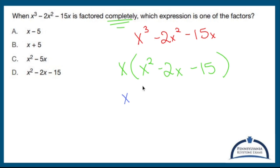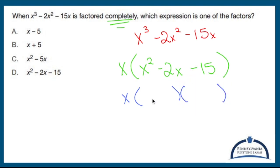This is a quadratic. Can I come up with two numbers that add up to negative two and multiply out to negative 15? Yes, I can. If it multiplies out to negative 15, one's got to be positive and one's got to be negative. Three and five multiply out to 15 — if one is negative and one is positive. Specifically, negative five and positive three: negative three and negative five add up to negative two and multiply out to negative 15.